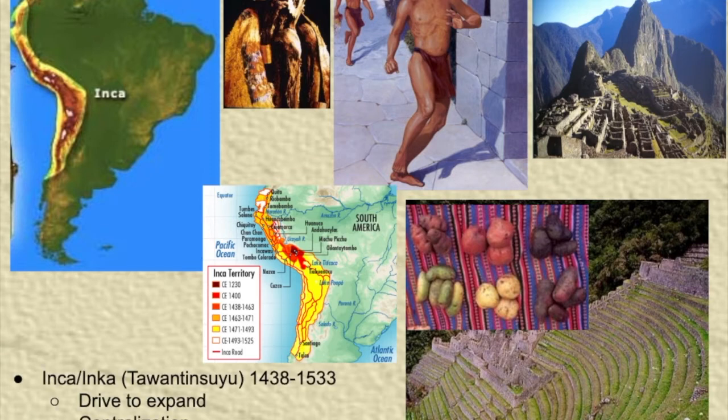Moving on to the Inca — like the Aztec empire, it develops really late in the post-classical era, often considered more of an early modern empire. Like the Aztecs, the Inca built on earlier societies that had been established there. The drive to expand: the Inca, like the Aztecs, were driven to expand to some degree by religion. One of the key concepts is split inheritance — where the title goes to one person while wealth goes in a different direction.